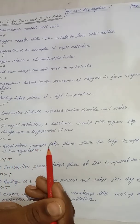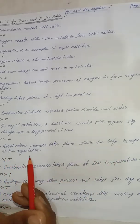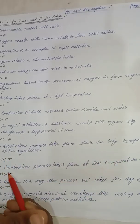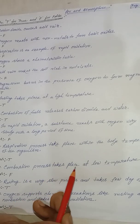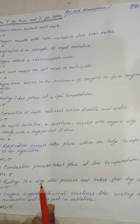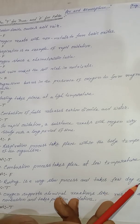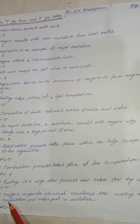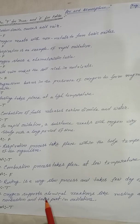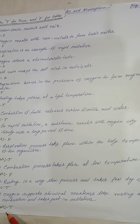The respiration process takes place within the body temperature of the organism — true. The combustion process takes place at low temperature — false. Rusting is a very slow process and takes a few days — true. Oxygen supports chemical reactions like rusting and combustion and takes part in oxidation — true.